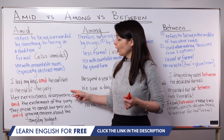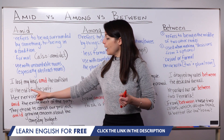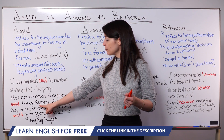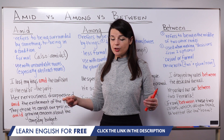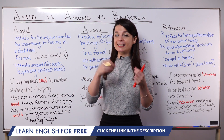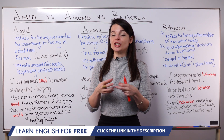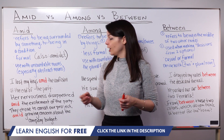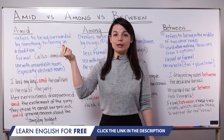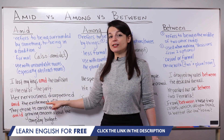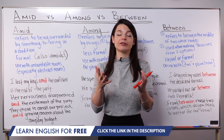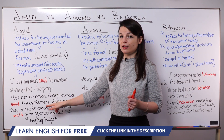Another example: Her nervousness disappeared amid the excitement of the party. Here, my noun is excitement — the excitement of the party. We imagine being at a party and it's an exciting condition. Amid the excitement means being inside the condition of an exciting situation. Her nervousness disappeared — she was nervous before the party, but because she was inside this condition of excitement, amid the excitement, her nervous feelings disappeared.